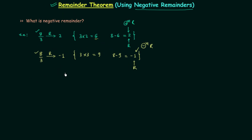The question is: why do we use negative remainders when we already have positive remainders? We use negative remainders because in some cases the calculation is reduced. For example, multiplying 2 by a number gives a larger result than multiplying minus 1 by the same number, so the calculation is simpler. This will be evident when we solve an example.